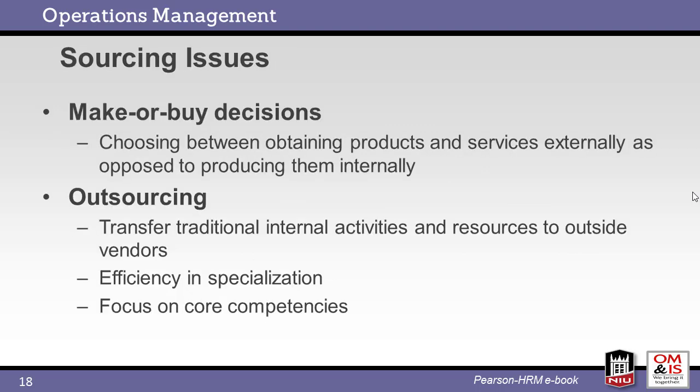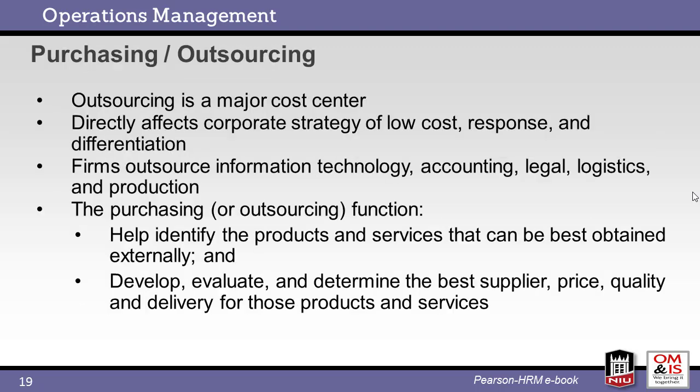A common decision is whether to make a given item within the company or buy it from an outside vendor. Companies may also decide to take an entire internal process and move it to an outside vendor. The company may gain from the specialized expertise of the external vendor while focusing on internal core competencies. What are your core competencies where you work? When outsourcing, companies must make sure that the outsourcing strategy is in alignment with the overall company mission. Different functions like accounting, logistics, and production may be outsourced. Examples may be found where almost every function has been outsourced by different companies.